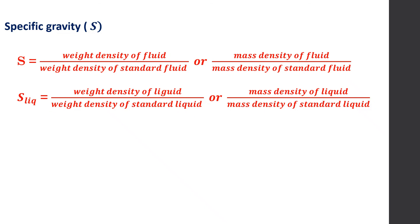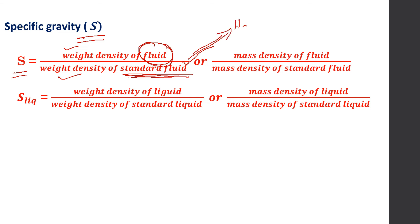The last property we will see today is specific gravity, represented by S. Specific gravity is the ratio of the weight density of a fluid to the weight density of a standard fluid — normally water is taken as the standard fluid. Alternatively, it is the mass density of the fluid divided by the mass density of the standard fluid. For liquids, it is the weight density of the liquid divided by the weight density of the standard liquid, or mass density of the liquid divided by mass density of the standard liquid.